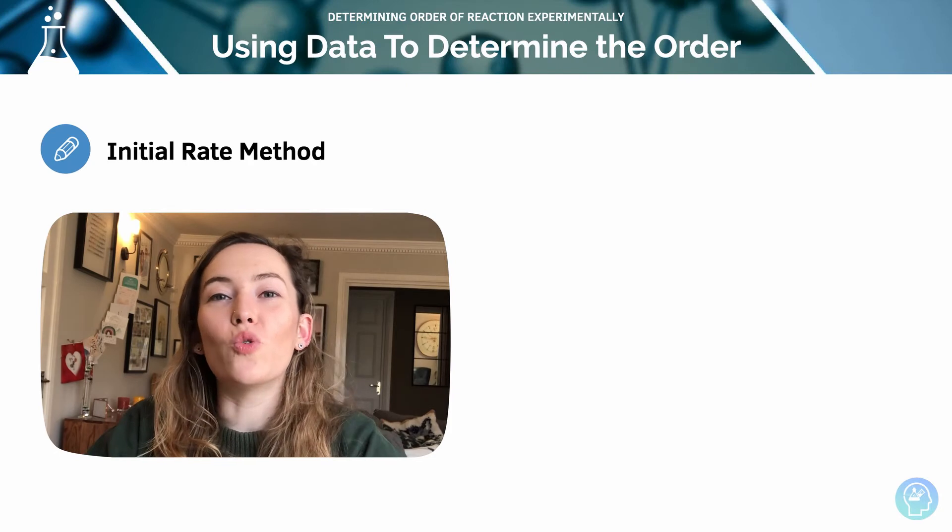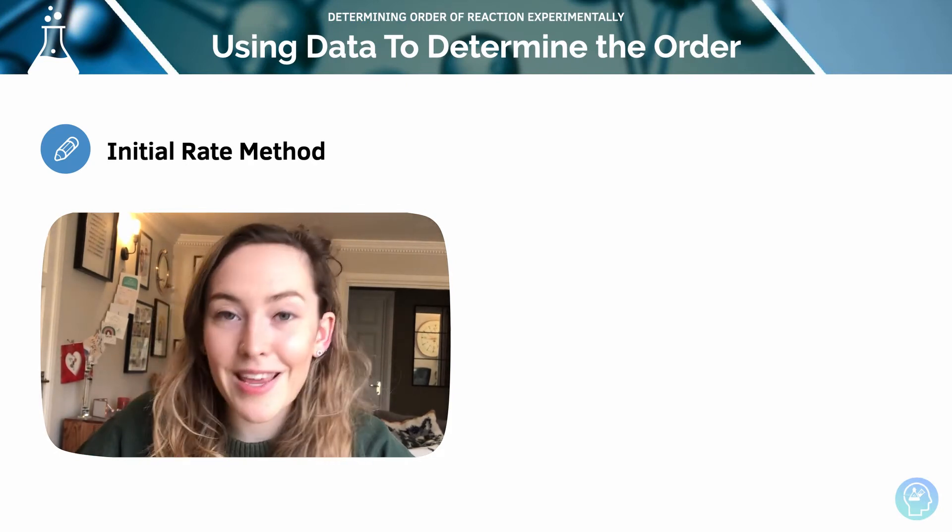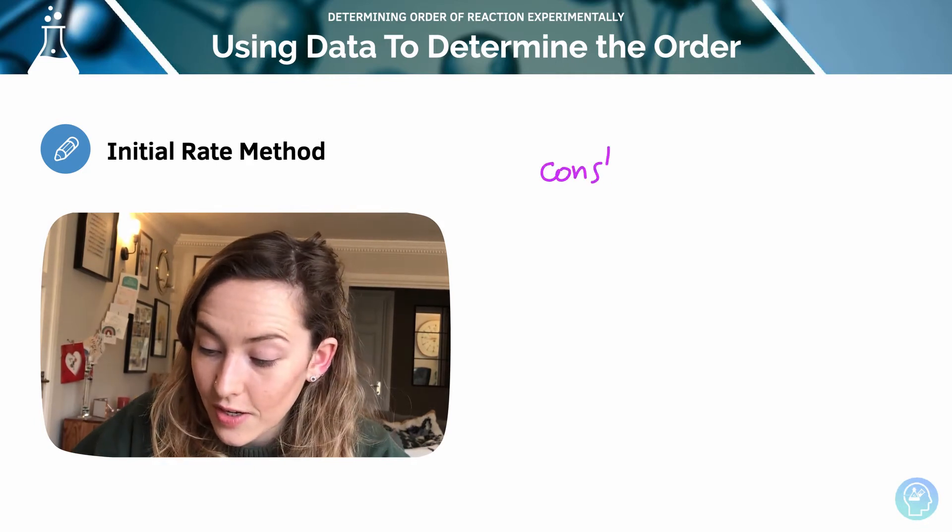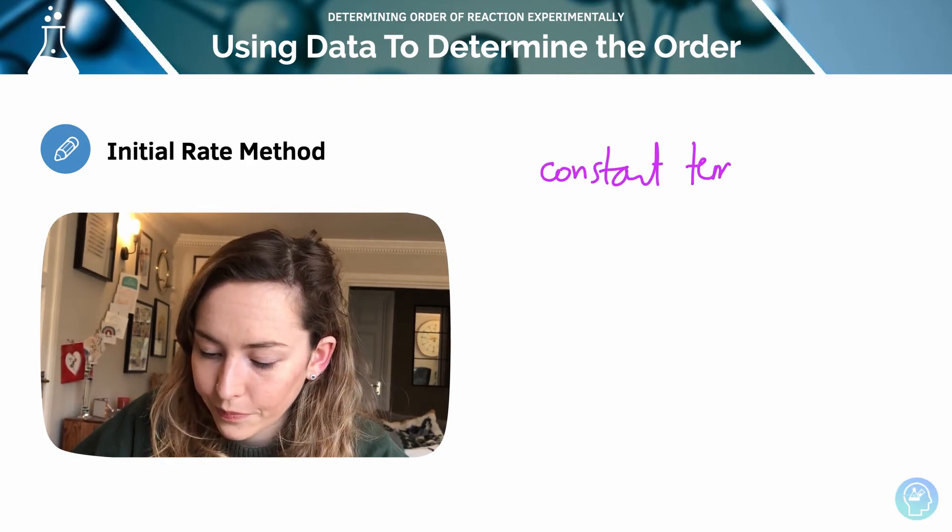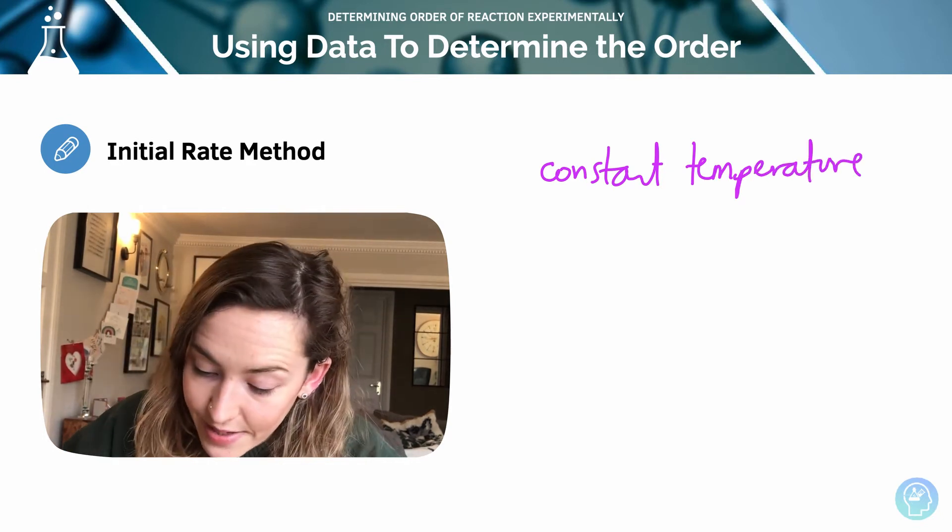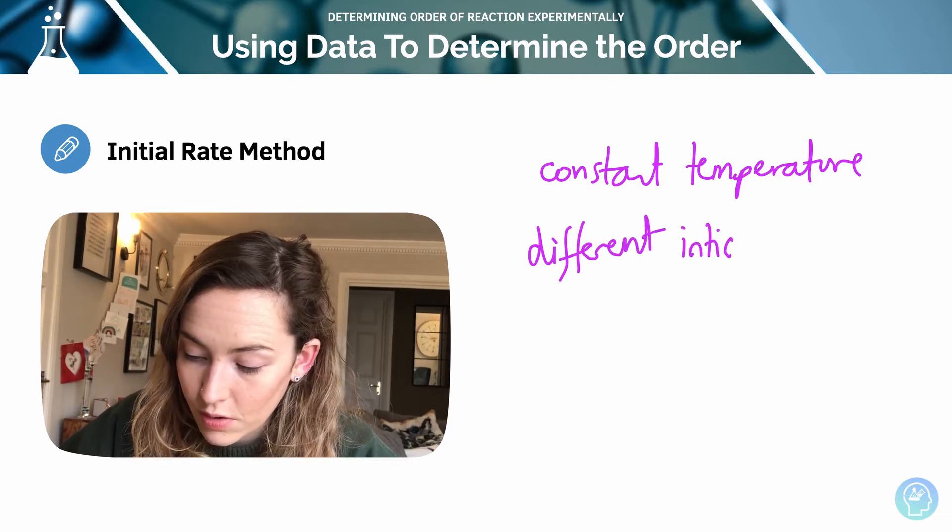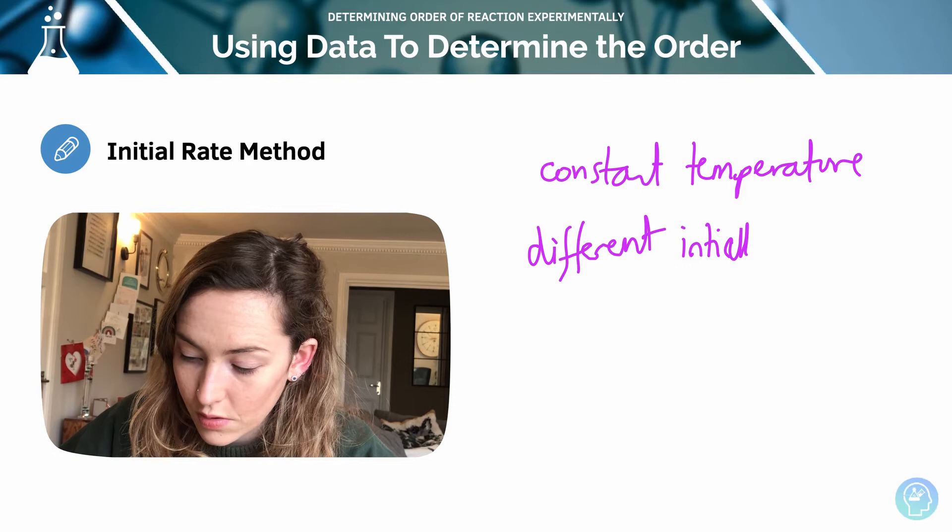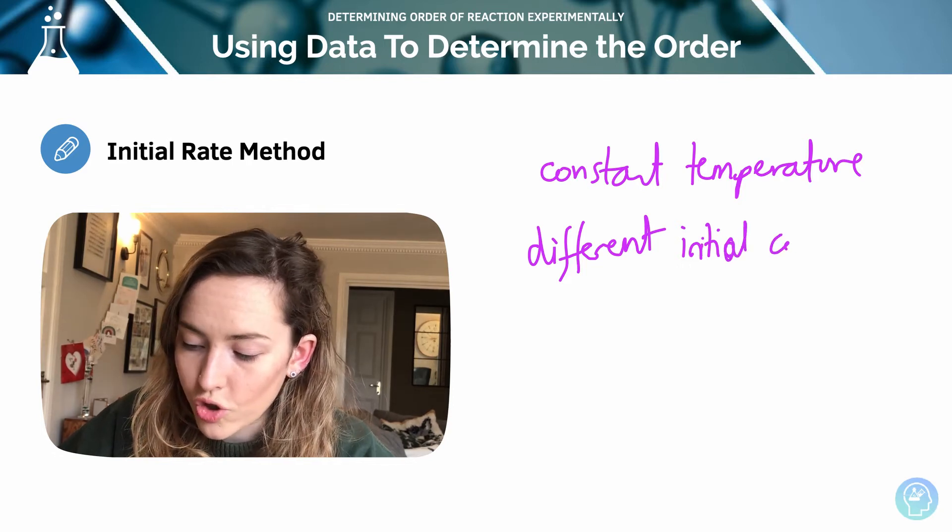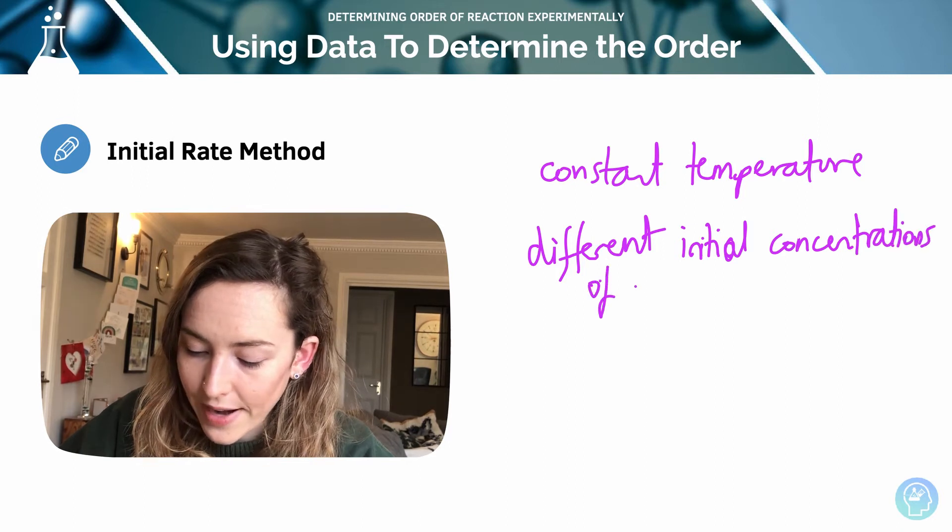We can use something called the initial rates method. With this, a series of experiments are conducted at a constant temperature. Each experiment is conducted at a different initial concentration or concentrations of reactant.